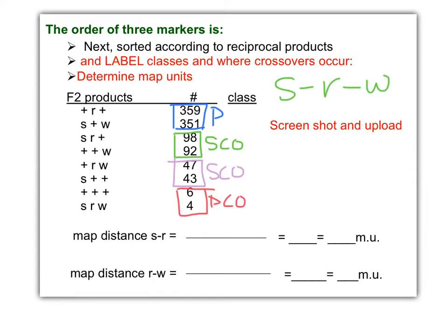Now we have still two other classes. Single crossover events. We need to figure out which numbers go to which crossover, right? Our question here is going to be where does the crossover occur? Is the crossover between S and R or R and W? Which distance are we determining, right?